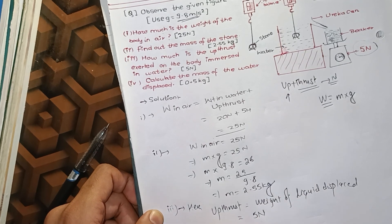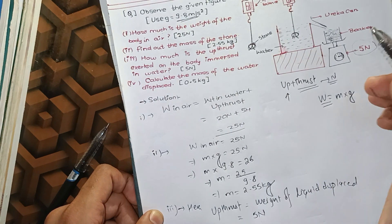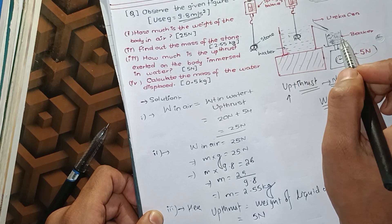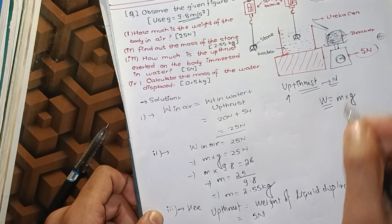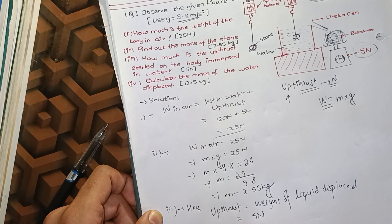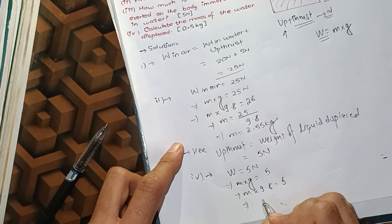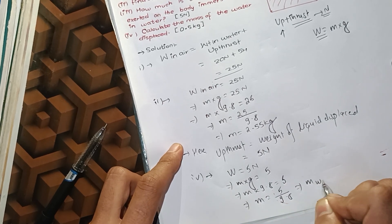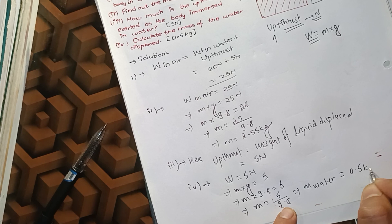To find the mass of water displaced: the weight is 5N, so mass times 9.8 equals 5. Therefore, mass equals 5 divided by 9.8, so the mass of water is 0.5 kg.